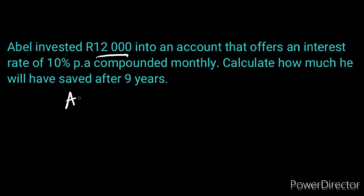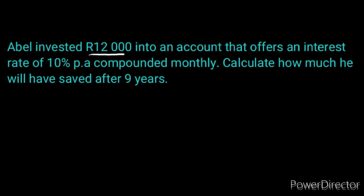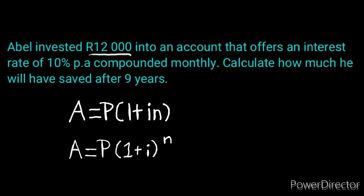This is where we have to use simple interest or compound interest depending on the situation. In this particular case, we have to use compound interest because it's compounded monthly. So as long as they tell us it's compounded, we know that we have to use compound interest. Whenever money is deposited only once, it is guaranteed that it is the lower grades' financial mathematics — either simple interest or compound interest.